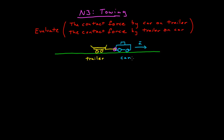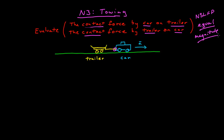Since the car is pulling the trailer, the contact force that the car exerts on the trailer must be greater. But since I've highlighted the contact force by the car on the trailer and the contact force by the trailer on the car — these are Newton's third law force pairs, which means they are exactly equal in magnitude. Opposite in direction, but equal in magnitude. The trailer exerts a contact force on the car exactly equal to the contact force the car exerts on the trailer.